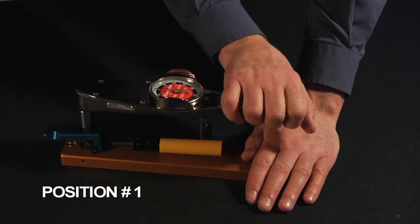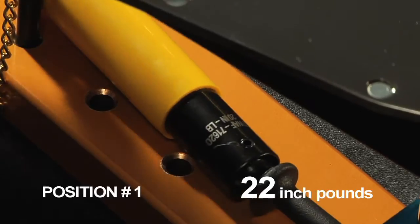The second competitor's wrench provides a torque of 22 inch-pounds when gripped at position one.